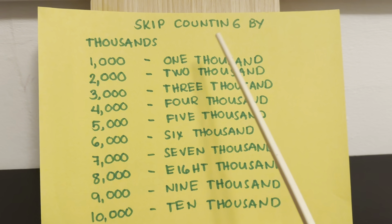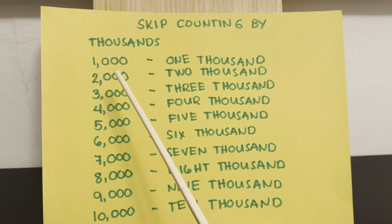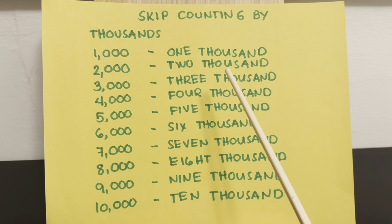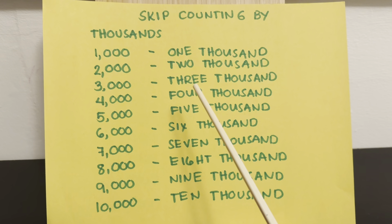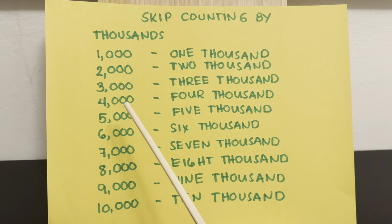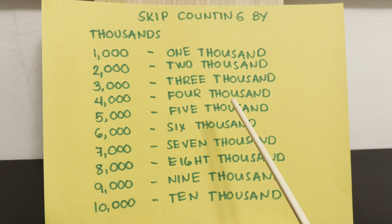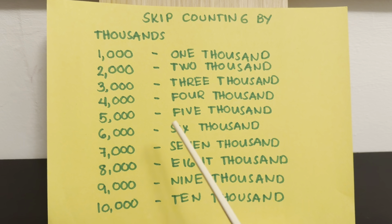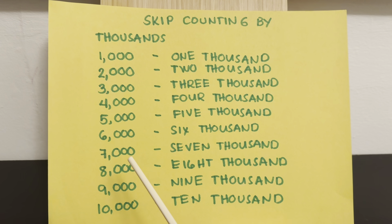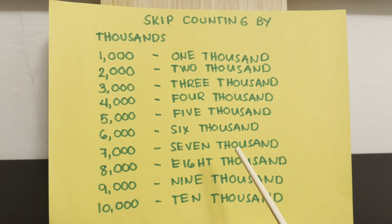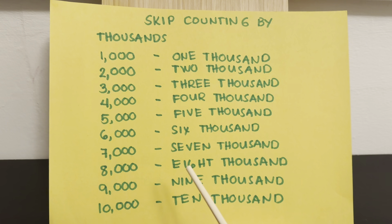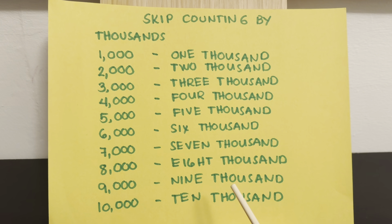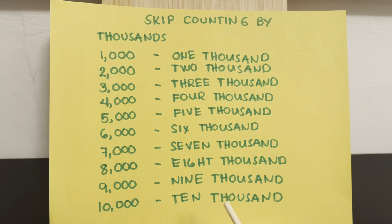And now let's try skip counting by thousands. 1,000, 2,000, 3,000, 4,000, 5,000, 6,000, 7,000, 8,000, 9,000, 10,000.